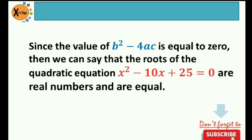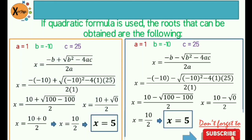We can check this by determining the roots. I used the quadratic formula to solve for the roots of this equation — separating the positive and negative sign to give emphasis to the two roots. My first root is equal to 5, and my second root is equal to 5 as well. So if your discriminant is equal to 0, the nature of the roots are real numbers and are equal.